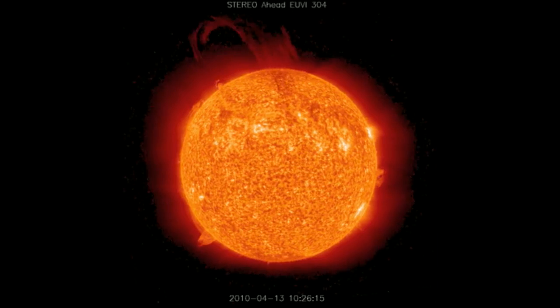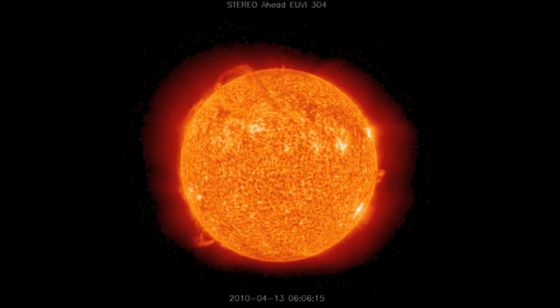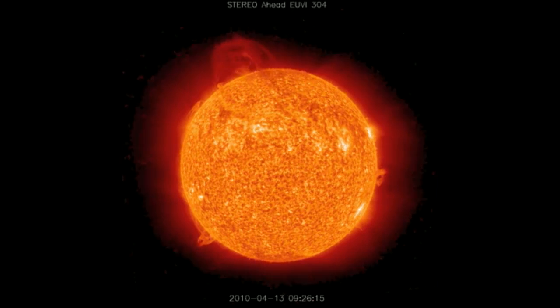An erupting prominence occurs when such a structure becomes unstable and bursts outward, releasing the plasma.